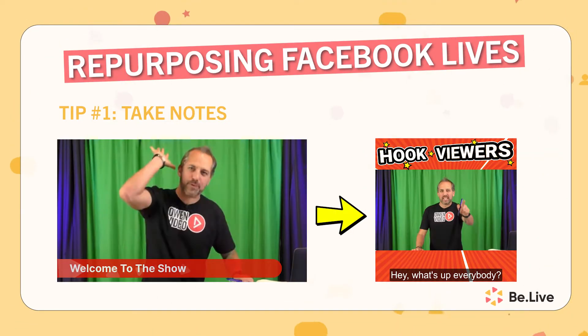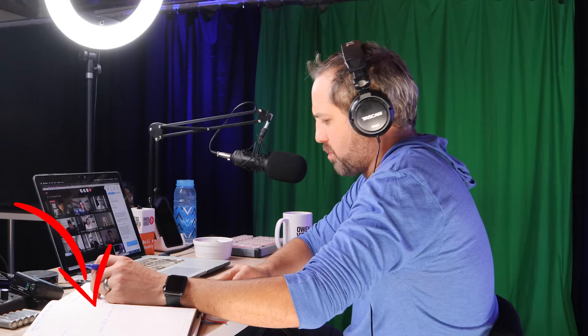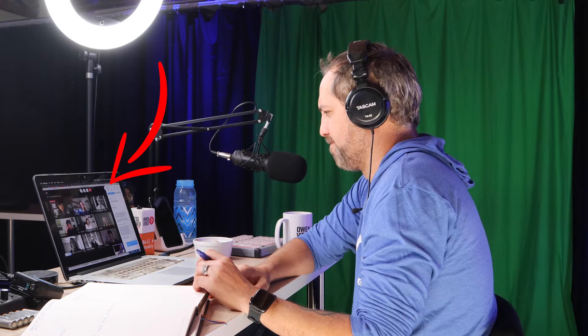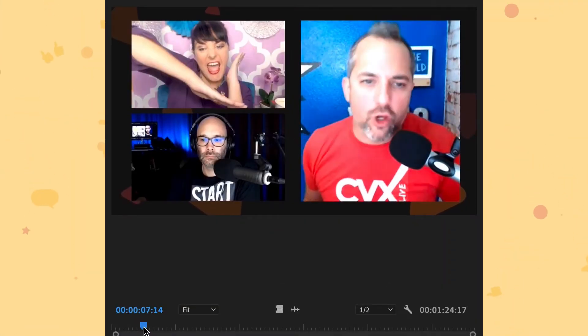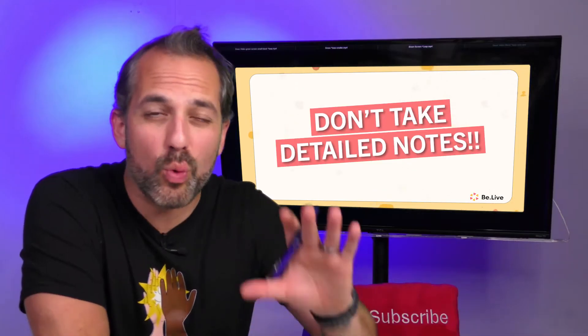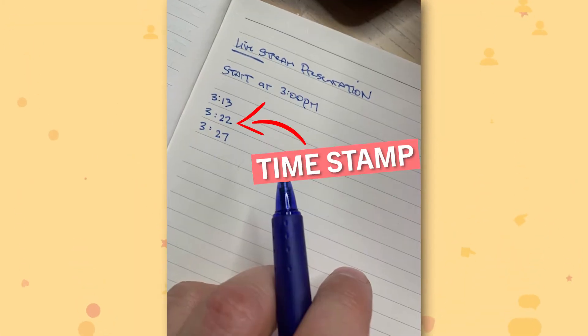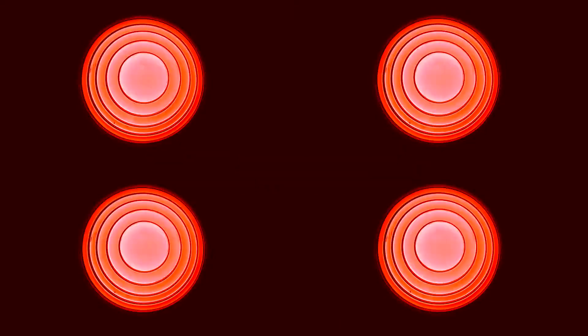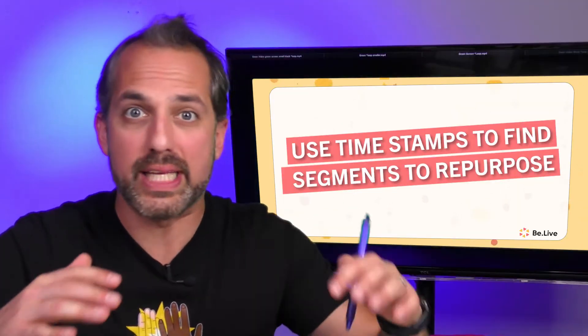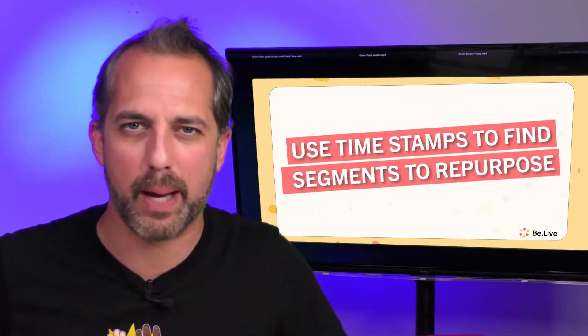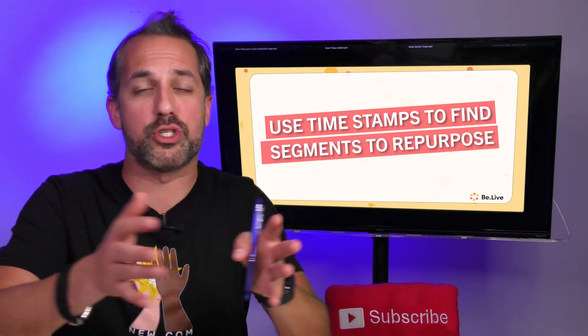Tip number one: take notes on a notepad while you're live streaming. I use handwritten notes like this journal, and whenever I say something cool or my guest says something cool, I write the timestamp on the paper. This makes it easy to go back to the replay and find the exact moment I want to reuse. I don't take detailed notes because I want to stay focused on what I'm talking about — I just write down the timestamp. When I'm finished with the live stream, my notes might look something like this. It doesn't have to be a perfect timestamp — just when you know you're saying something cool, write down the time, knowing you'll have to skip forward or back a little to find the perfect in and out zone for repurposing.